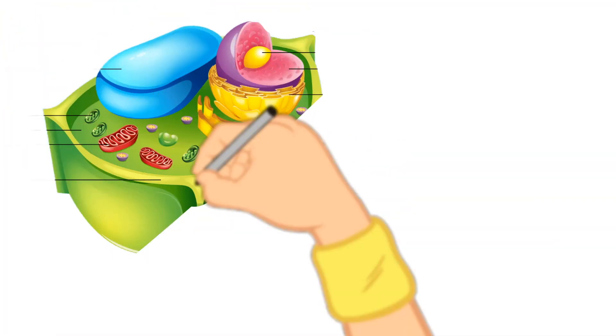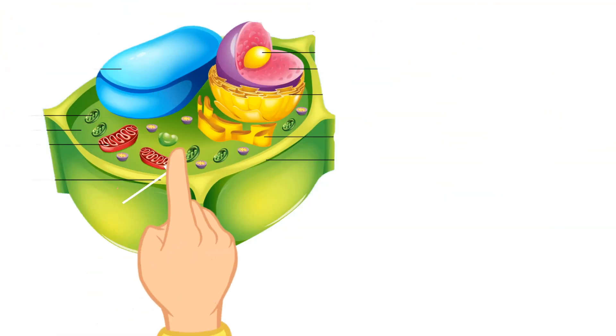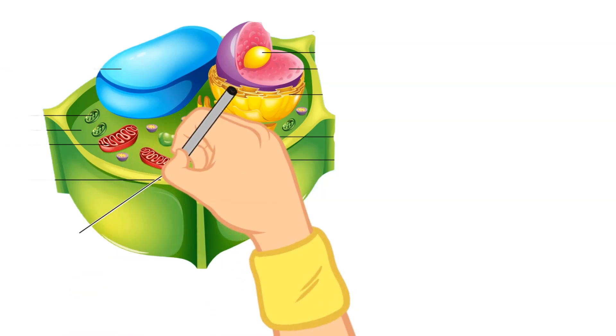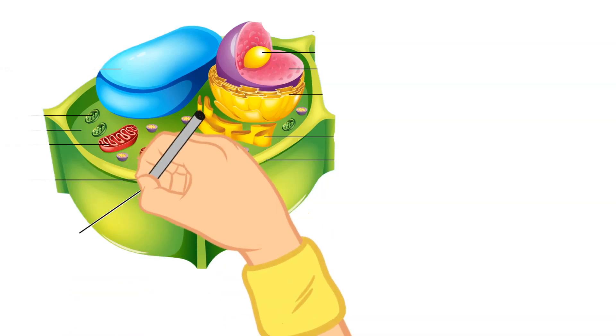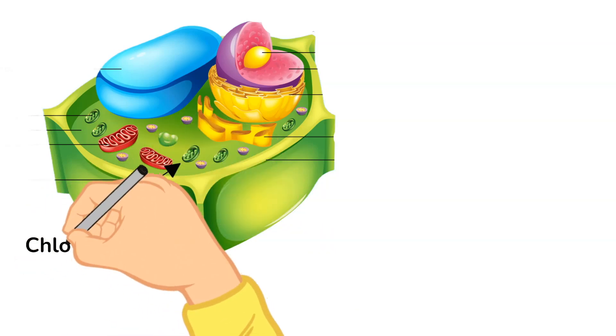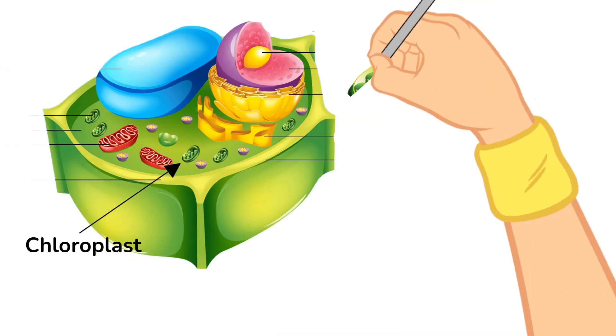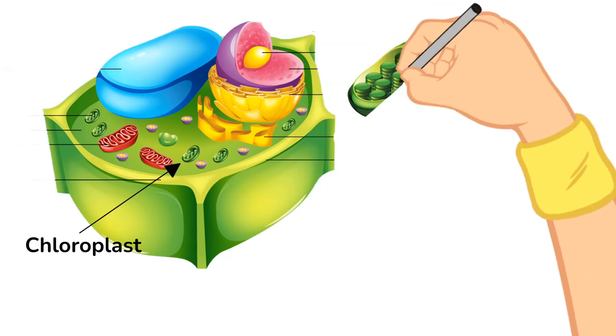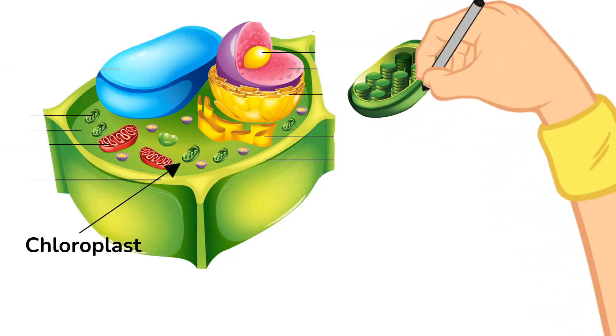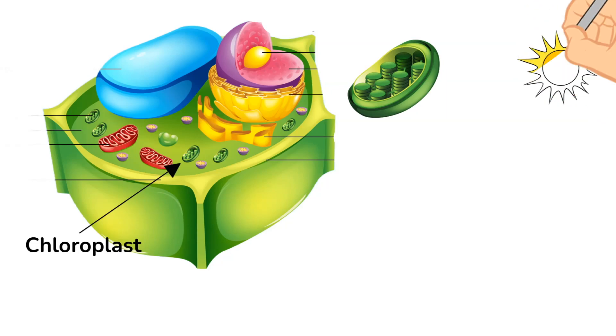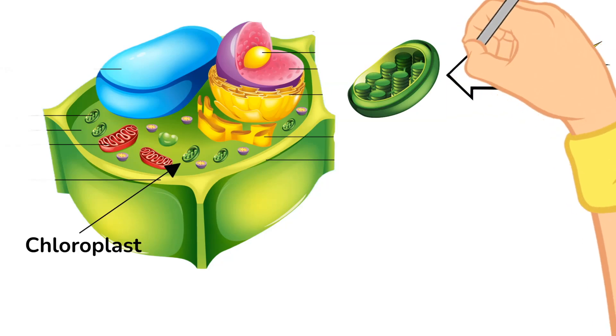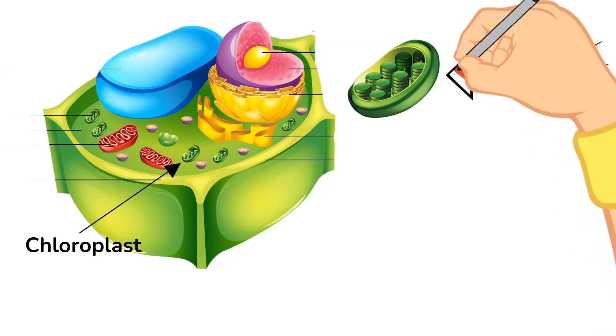The last main difference between animal cells and plant cells is that plant cells have an organelle called a chloroplast. Animal cells do not have this organelle at all. The chloroplast is very special and this is where sunlight is converted into food and energy for the plant. This is a process that we have called photosynthesis.